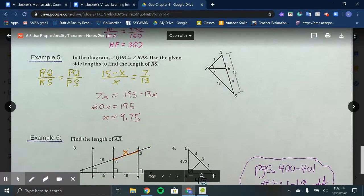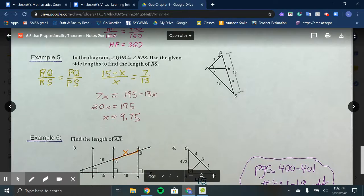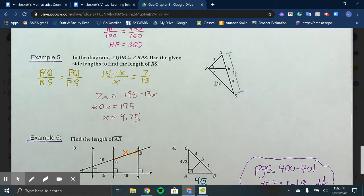We're looking at RQ, this small piece, over RS, the bigger piece down here. Then PQ, the small piece up here, over PS, that longer side of the bigger triangle.